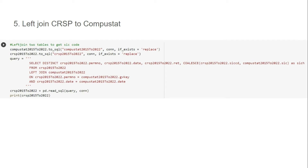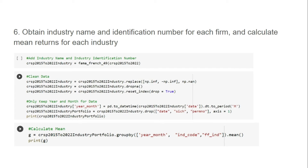Next, we left-join CRSP to Compustat data. The purpose of this step is to get the SIC codes for those companies that do not have SIC codes in the CRSP files but do have SIC codes in the Compustat files. We then use the function developed previously to get the industry name and identification code for each company. We group companies by year, month, and industry code and calculate the mean monthly returns for each industry.